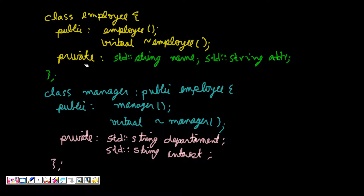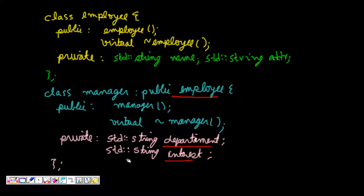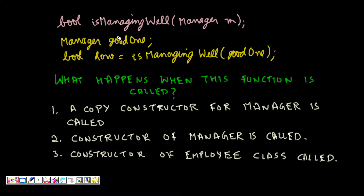Let's take a concrete example. We have a class Employee with a constructor and a virtual destructor so that other classes can derive from it, and it has two attributes: string name and address. Then we have class Manager which derives from Employee, so Manager is a subclass of Employee, and it adds additional attributes like which department it manages and what are its interests. We have a function 'is_managing_well' to which we pass a Manager object.